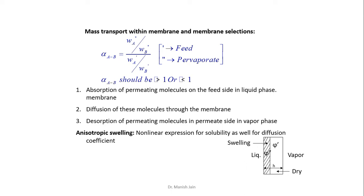In this process, vaporization occurs inside the membrane itself. When liquid molecules are absorbed at the membrane surface, they are in the liquid phase; once absorbed into the membrane, they are in the solid phase, trapped in the solid structure. Then they diffuse from the feed side to the permeate side. When they reach the permeate side and desorb, they dissolve in the vapor phase. So the phase change from liquid to vapor occurs during transport across the membrane itself.